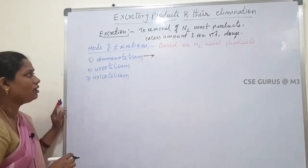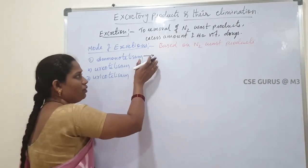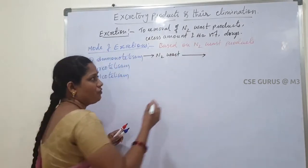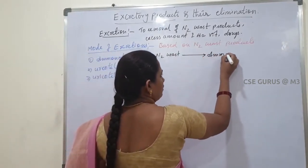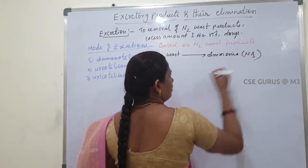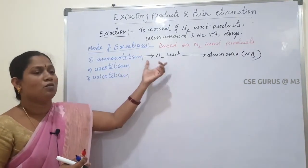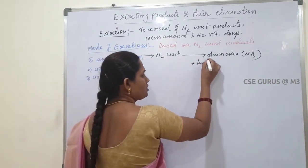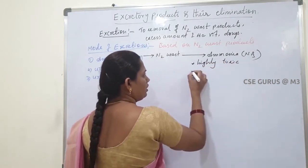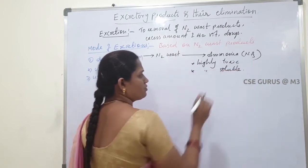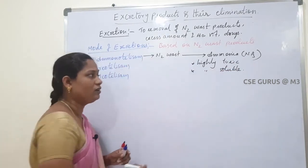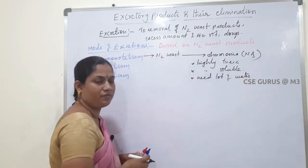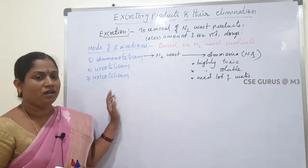First, let us discuss ammonotelism. Ammonotelism means the nitrogenous waste product is released in the form of ammonia (NH3). That process is called ammonotelism. Ammonia is a highly toxic substance compared to others. It is also highly soluble in water, and it needs a lot of water for the excretion process.